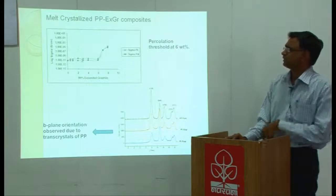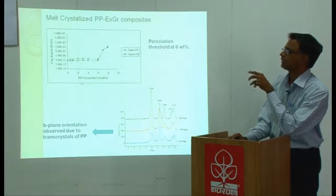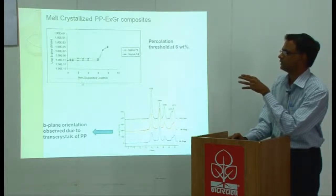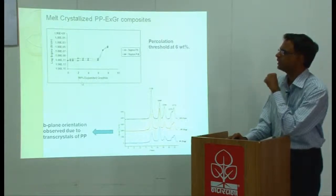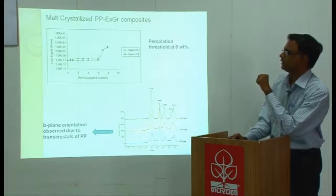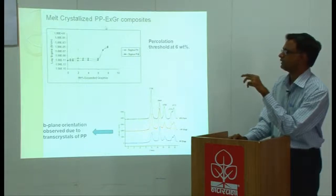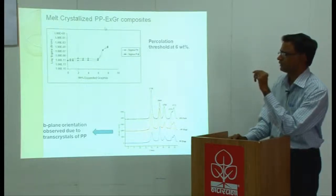This plot shows the variation of electrical conductivity AC-DC behavior of polypropylene expanded graphite system when the composites were made by powder mixing route. When you go for melt crystallized PP expanded graphite composites, you make PP expanded graphite composite the way you made it in powder mix route.